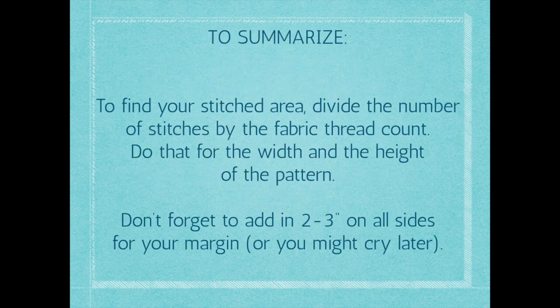To find your stitched area, you divide the number of stitches — either from your pattern or by counting the actual grid squares — by the fabric thread count. You do that for the width and the height, and write all this down on a piece of paper. And then you add in your 2-3 inches on all sides for your margin — or you might cry later. You will cry later.